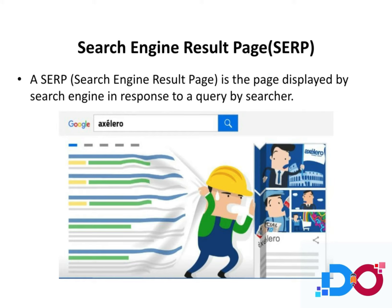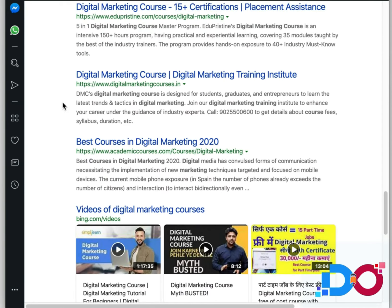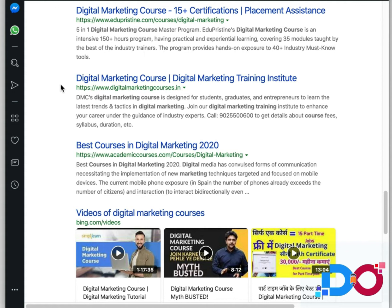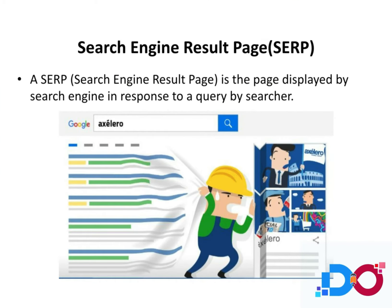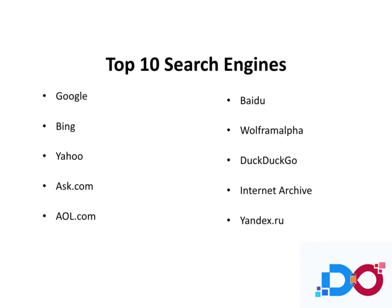Going back to JustDial as a human-powered directory — you called, interacted with a human, and they sent you results in a specific format via SMS: the name of the company or service provider, their phone number, and their location of service. That SMS is essentially the search engine result page for JustDial. Google, Bing, and Yahoo are the most predominantly used search engines in the world, and almost everybody else uses what these three offer.